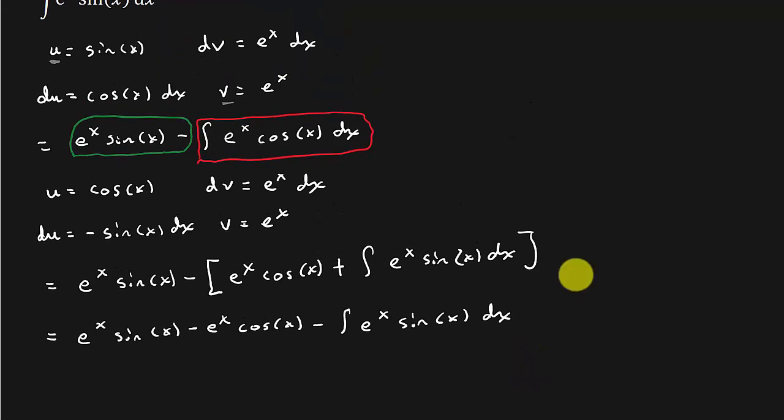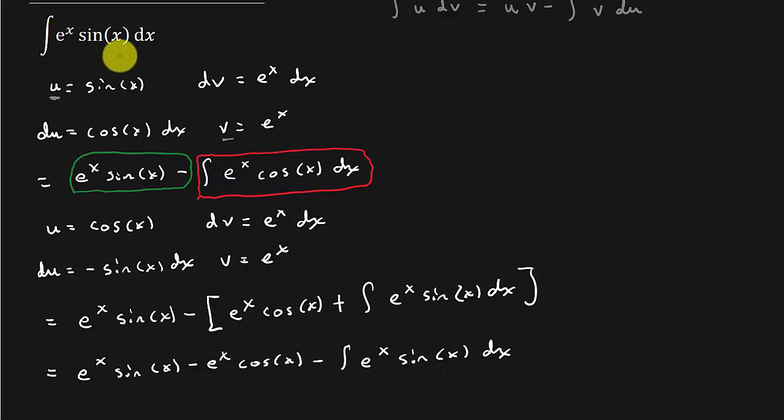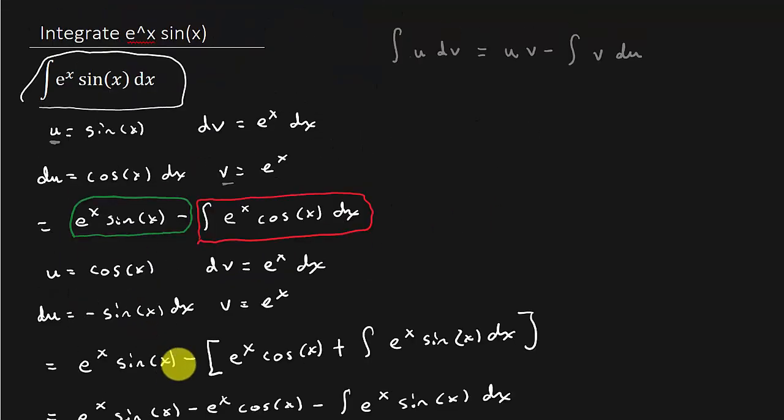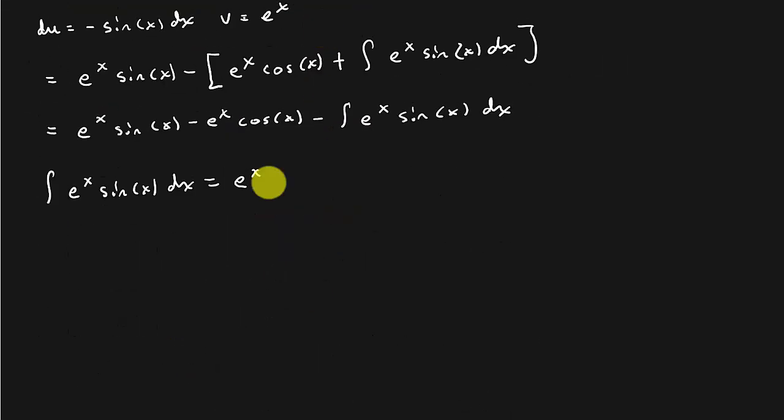All right. So now we're going to get e to the x sine x minus e to the x cosine x minus the integral e to the x sine x dx. So look at this. Now we are right back where we started. So basically we've got this thing, which we have the integral e to the x sine x dx is equal to e to the x sine x minus e to the x cosine x minus the integral e to the x sine x dx. But we are trying to find the integral of e to the x sine x. So what I'm going to do is I'm going to add e to the x sine x dx to both sides.